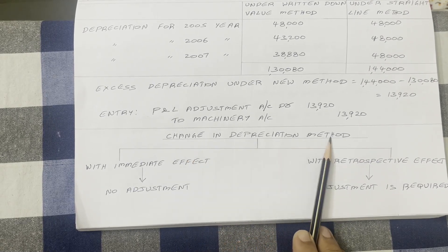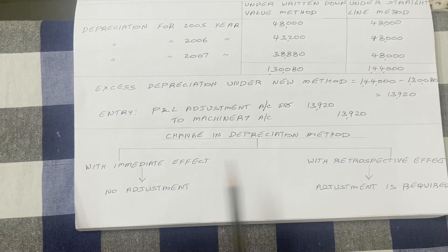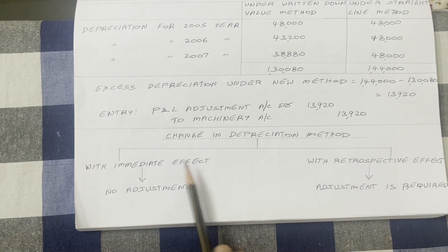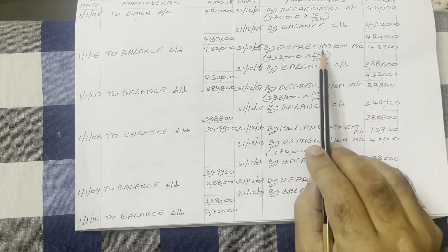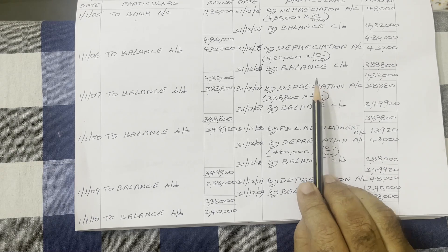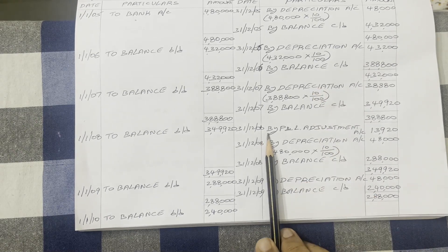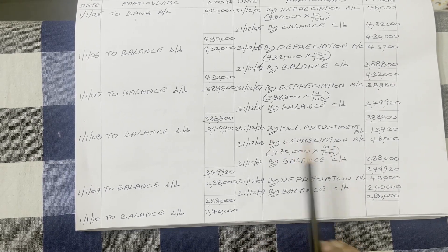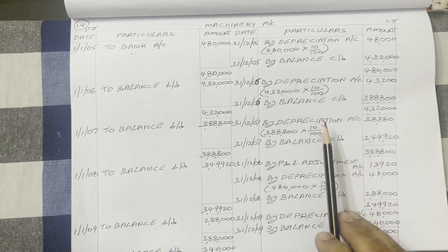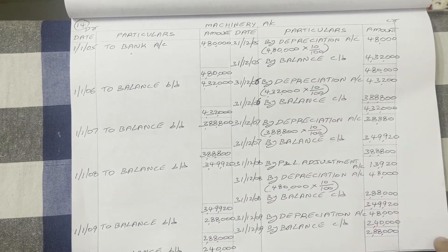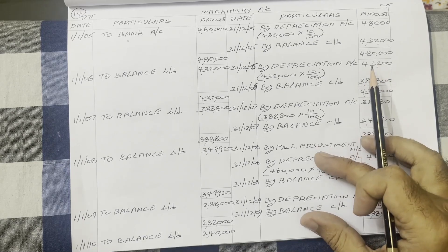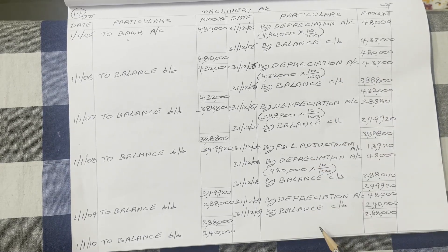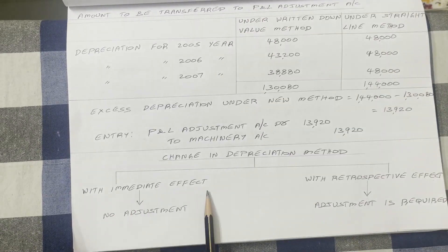Change in depreciation method is of two types: with immediate effect, and with retrospective effect. With immediate effect means: in 2008 they changed the depreciation method, so for the first three years we have already provided depreciation under diminishing balance method, and from 2008 onwards we have to provide depreciation on the fixed installment method. The three years of diminishing balance depreciation we need not adjust. Therefore, if the sentence 'with immediate effect' is given, we need not show any adjustments.